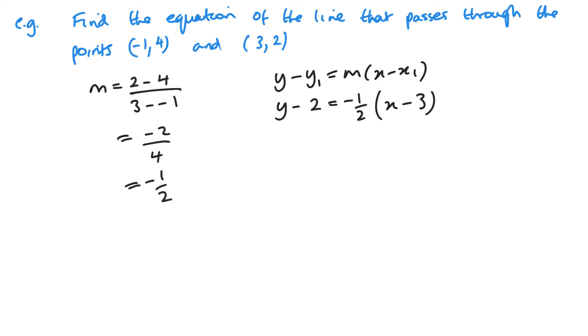Substituting my values in, you can see that I do have this fraction which is a little bit annoying. What I like to do is multiply by the denominator, so the 2. So I'm going to multiply everything by 2. So 2y minus 4 equals minus 1 times x minus 3. So we have 2y minus 4 equals minus x plus 3.